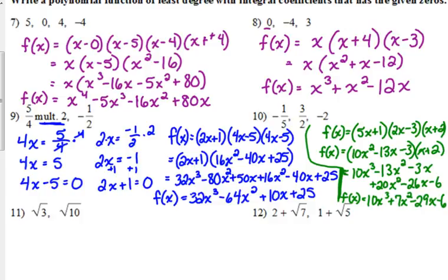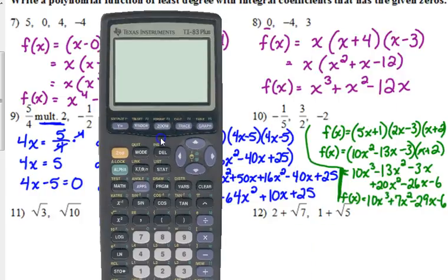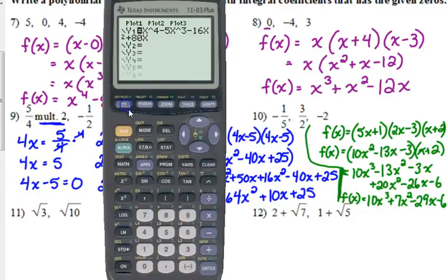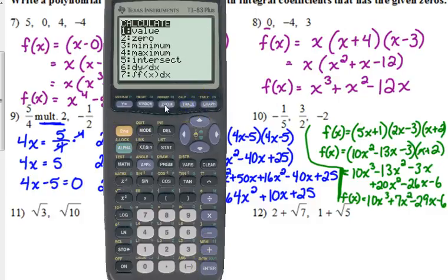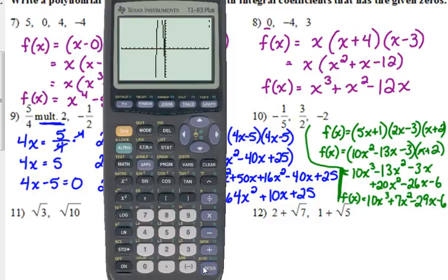And I could plug it into my y equals and check. I would just have to. This time I wouldn't be able to find those on the table. So I actually have an option. Let me show you something that you may not know is there. 10x cubed plus 7x squared minus 29x minus 6. I can press second trace. That very first one is value. So when I press enter it's going to graph it and then it's going to pop up and say x equals.